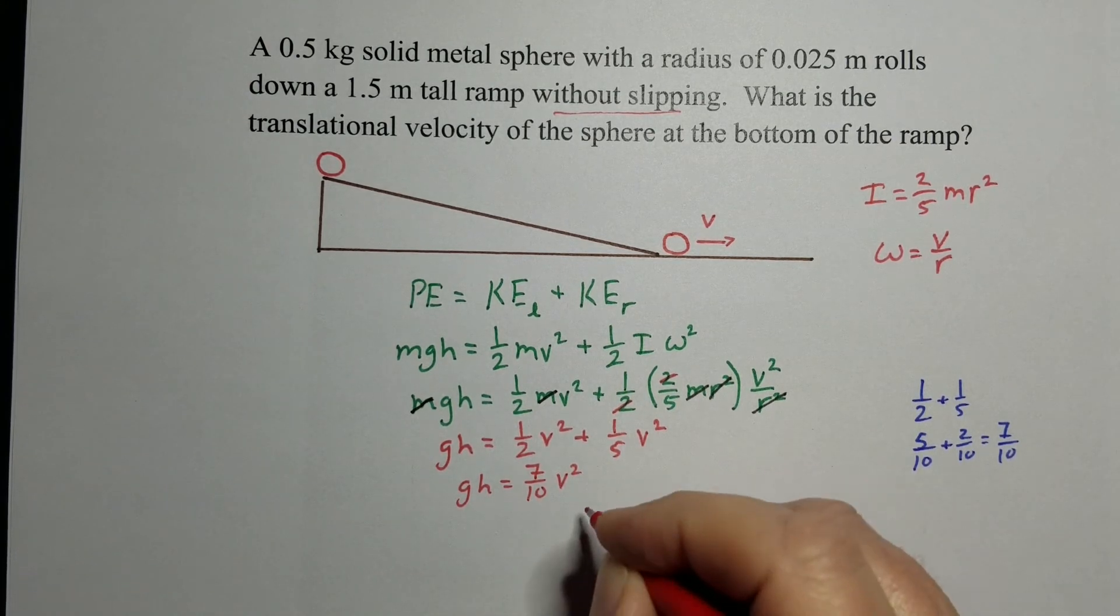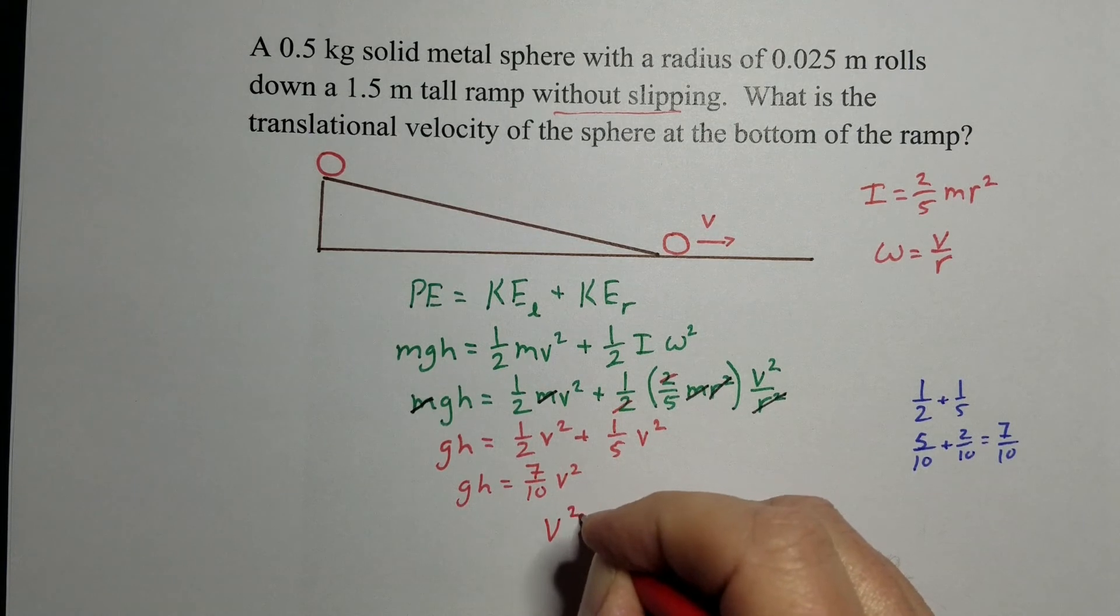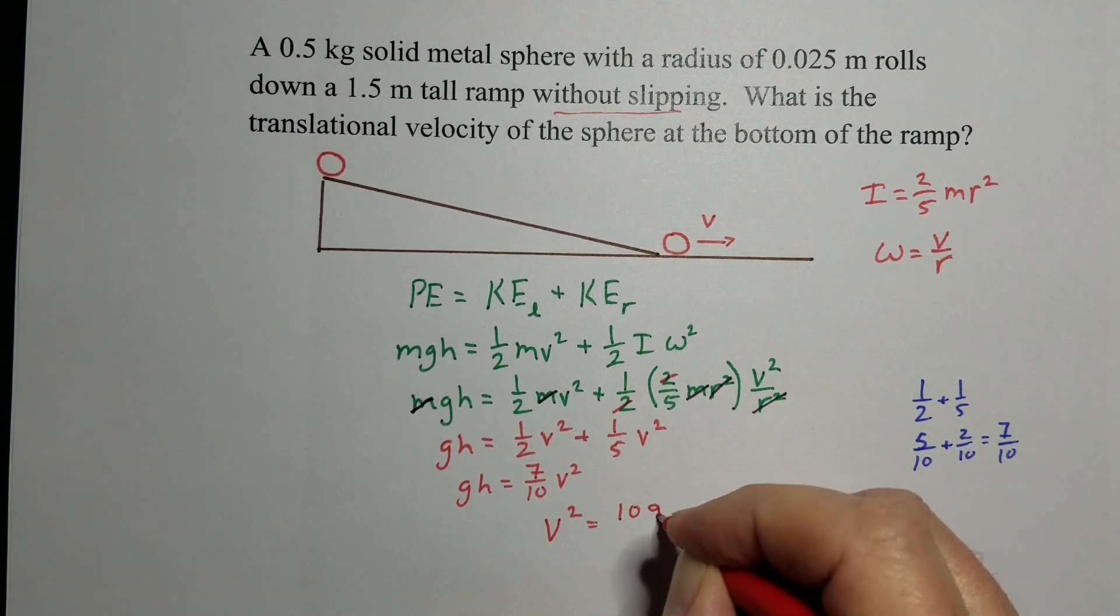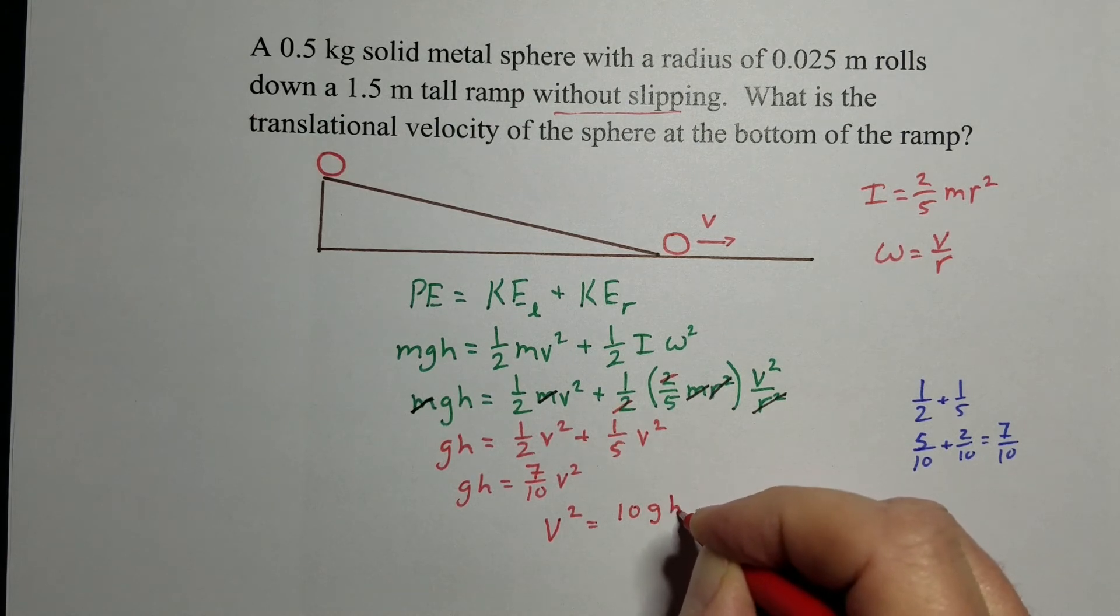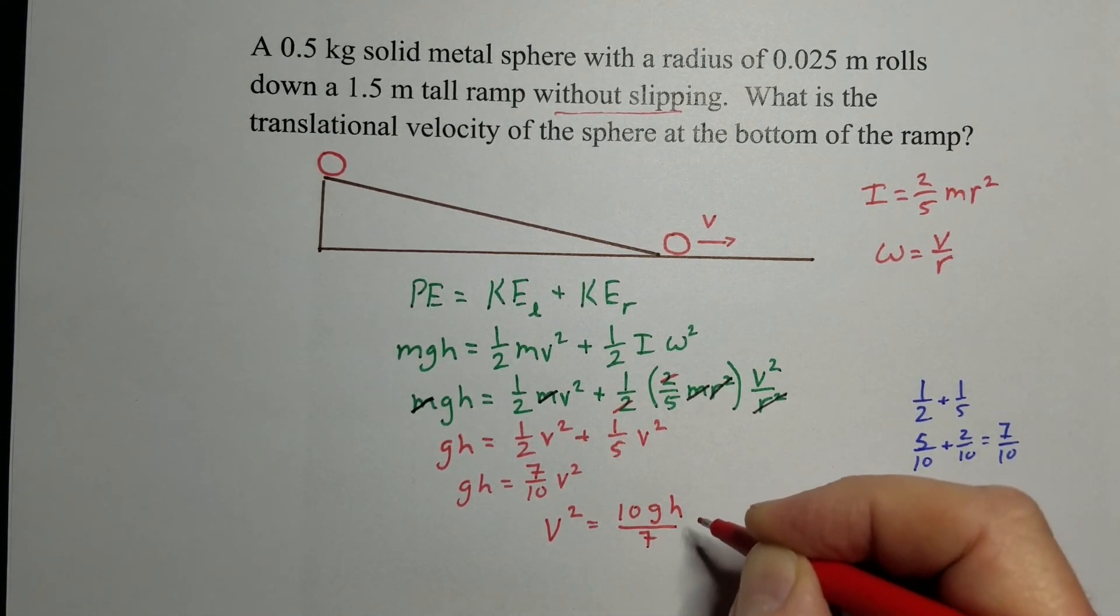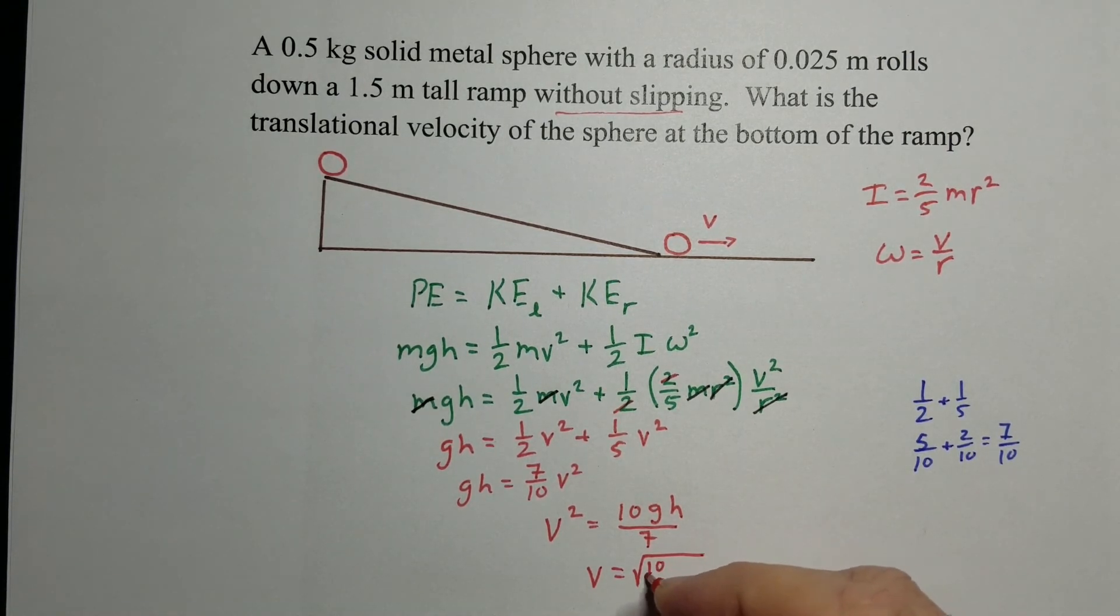We'll solve for v. So v squared equals 10 times g times h over 7. So we take the square root. v equals the square root of 10-sevenths gh.